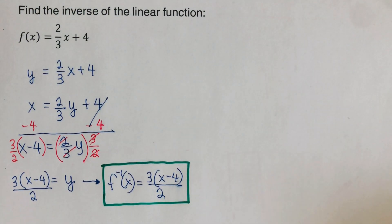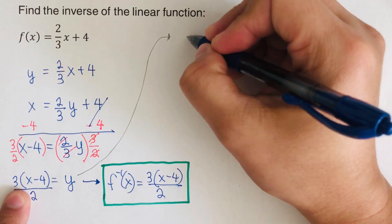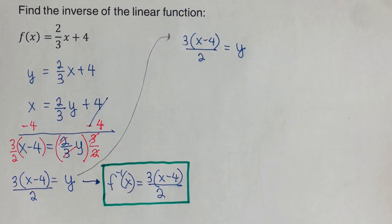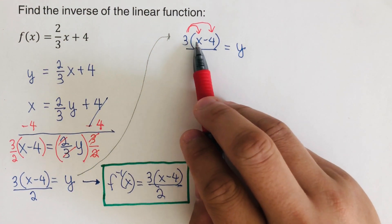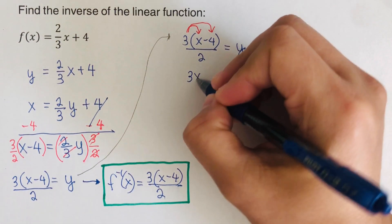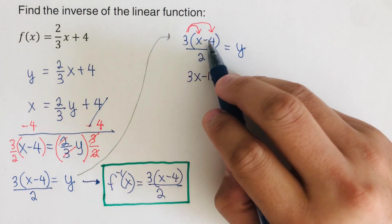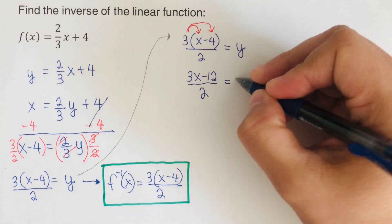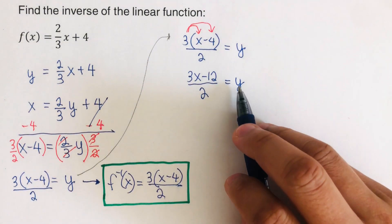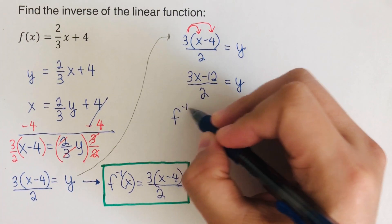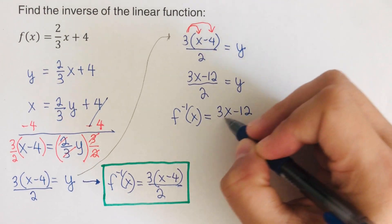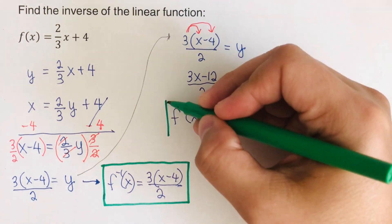We can express this in a different — but equivalent — way by distributing the 3. Remember to distribute to both terms inside the parentheses: 3 × x = 3x and 3 × (-4) = -12. So we get (3x - 12) / 2 = y, meaning f⁻¹(x) = (3x - 12) / 2.